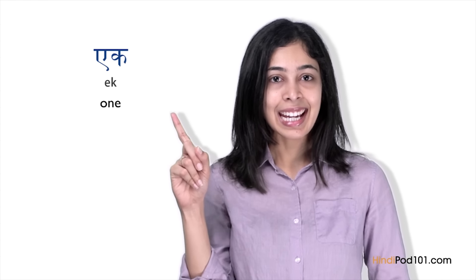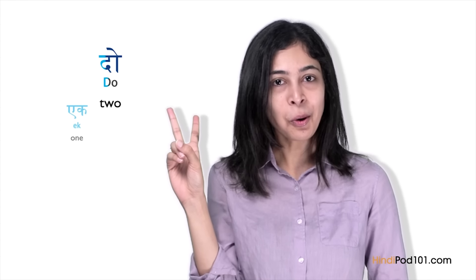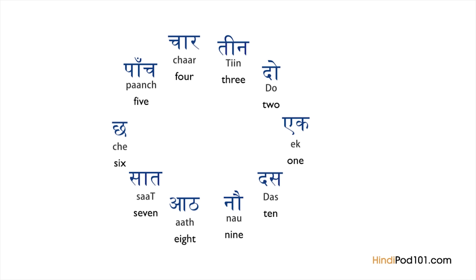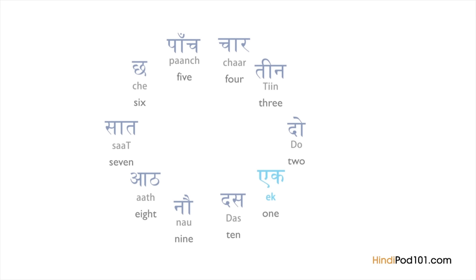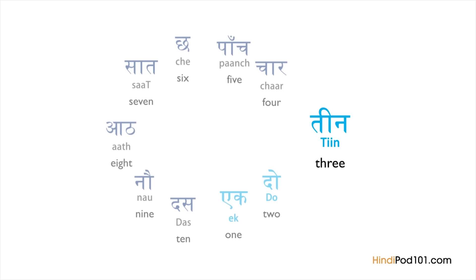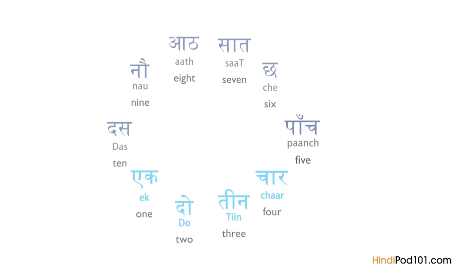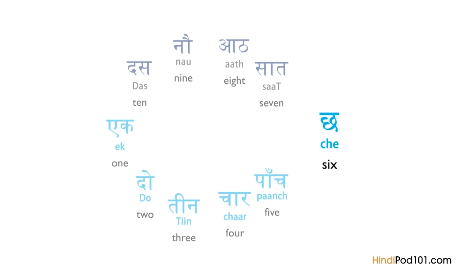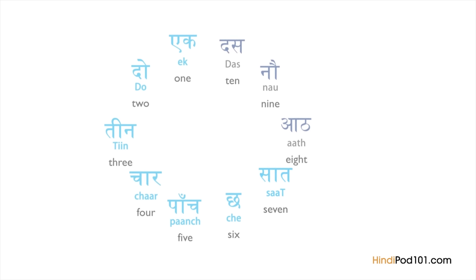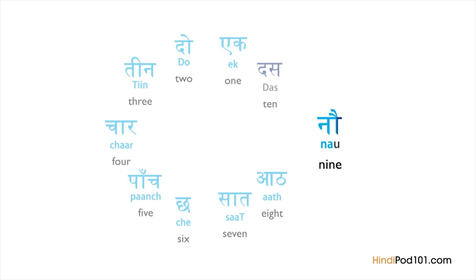The numbers 1 through 10 in Hindi are: Ek (1), Do (2), Teen (3), Chaar (4), Paanch (5), Chai (6), Saat (7), Aat (8), Nao (9), Das (10).